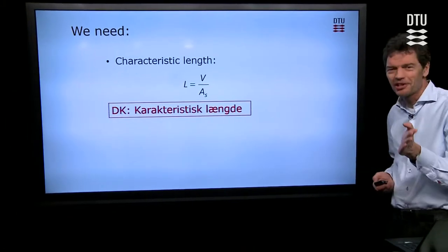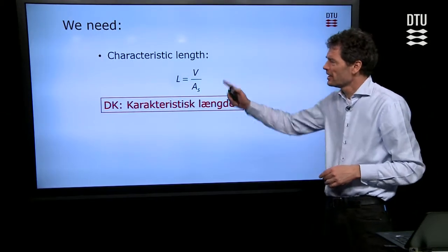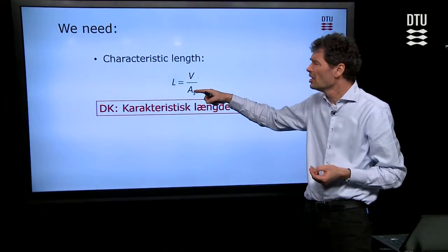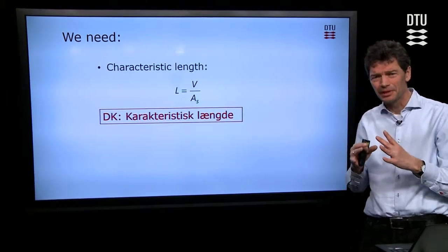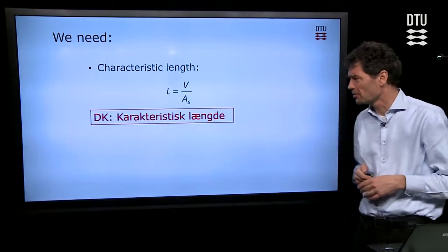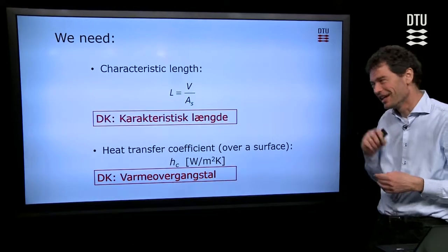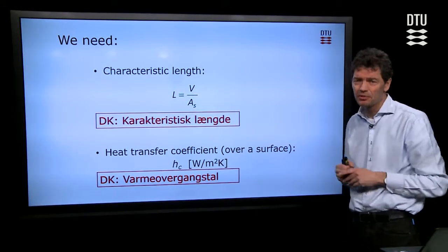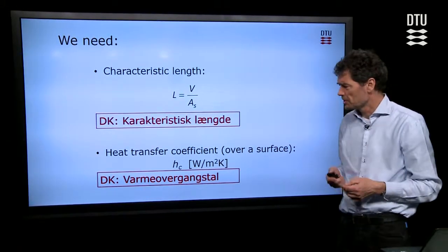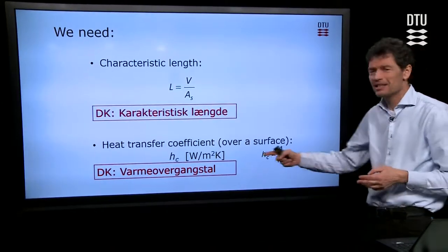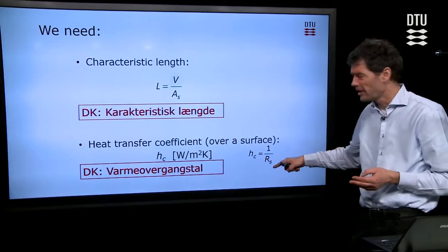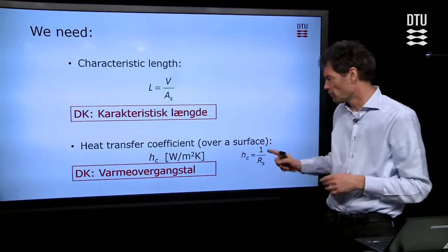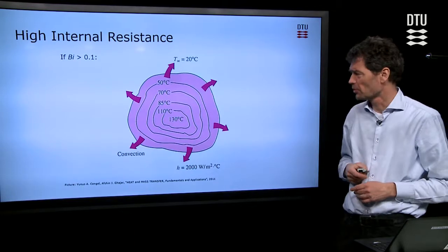We need a little bit more because I talked two times about a characteristic length. That length for any shape of material we can calculate as the volume divided by the surface area. Another number we need is the heat transfer coefficient hc, which represents heat transfer over the surface. Sometimes we represent a similar value as one over the surface resistance, an inverse unit. We use very often one number or the other and can calculate easily from one to the other.